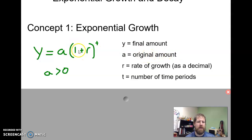We have then 1 plus r, r is our rate of growth as a decimal, and then we take this to the power of t to represent time periods, but t is really our x, it's our independent variable.